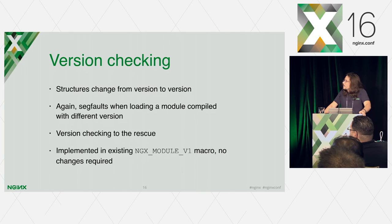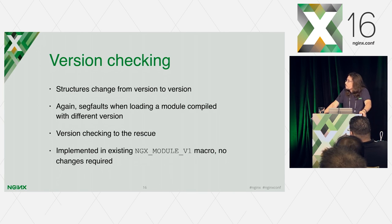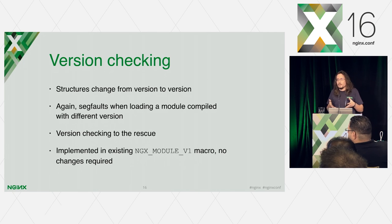A similar thing is version checking. The same problem with structures happens when you switch from version to version, and again it will segfault when loading a module compiled with a different Nginx version — something you are likely to see if you try it. So while loading a module, Nginx checks the version the module was compiled with.